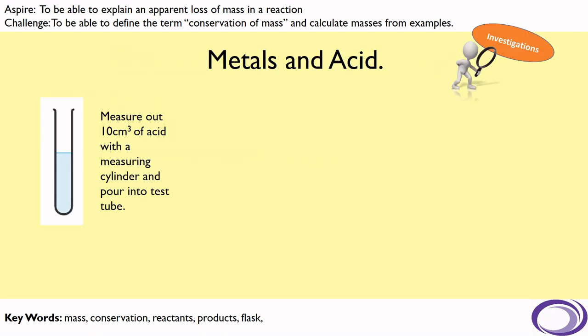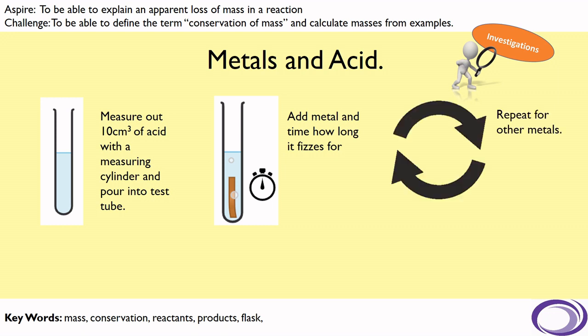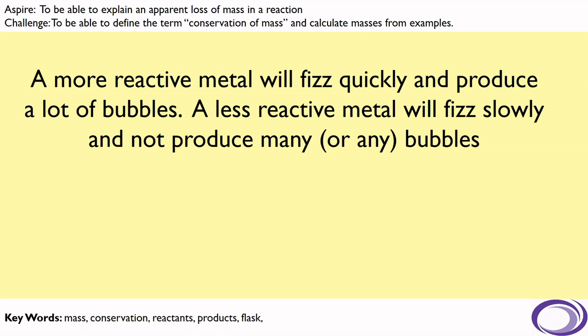In the first reaction, the reaction of metals with acid, we will measure out 10 centimetres cubed of acid with a measuring cylinder and pour that into a test tube. We will then add a sample of metal and time how long it fizzes for, and then repeat that for other metals. We may need to also note down any other observations, because some metals may fizz more vigorously than others. A more reactive metal will fizz quickly and produce a lot of bubbles, whereas a less reactive metal may fizz slowly or not produce any bubbles, so we need to note that observation as well as how long it fizzes for.